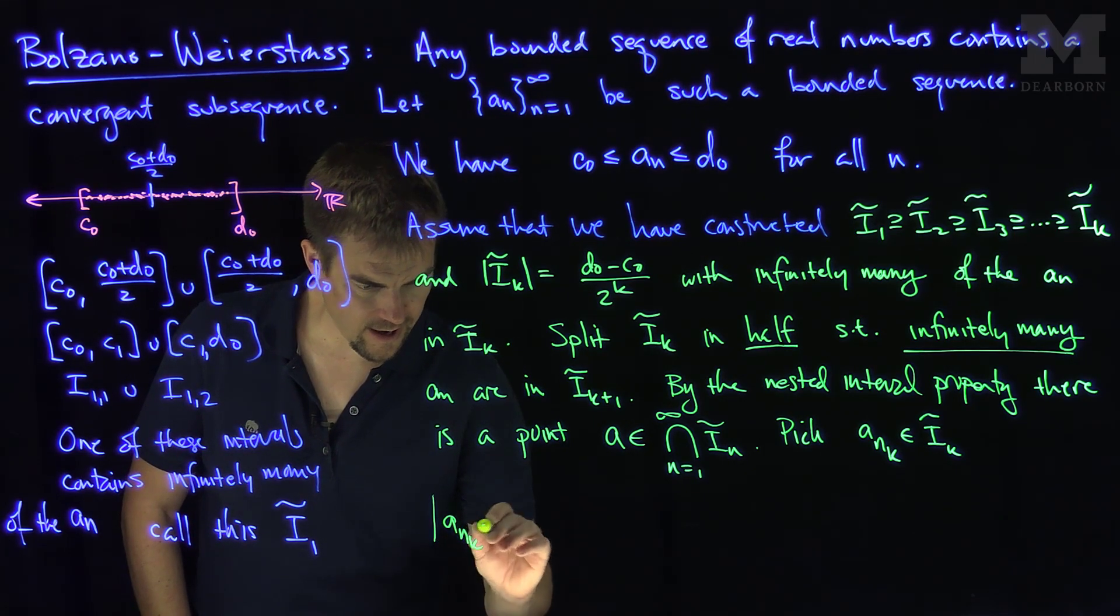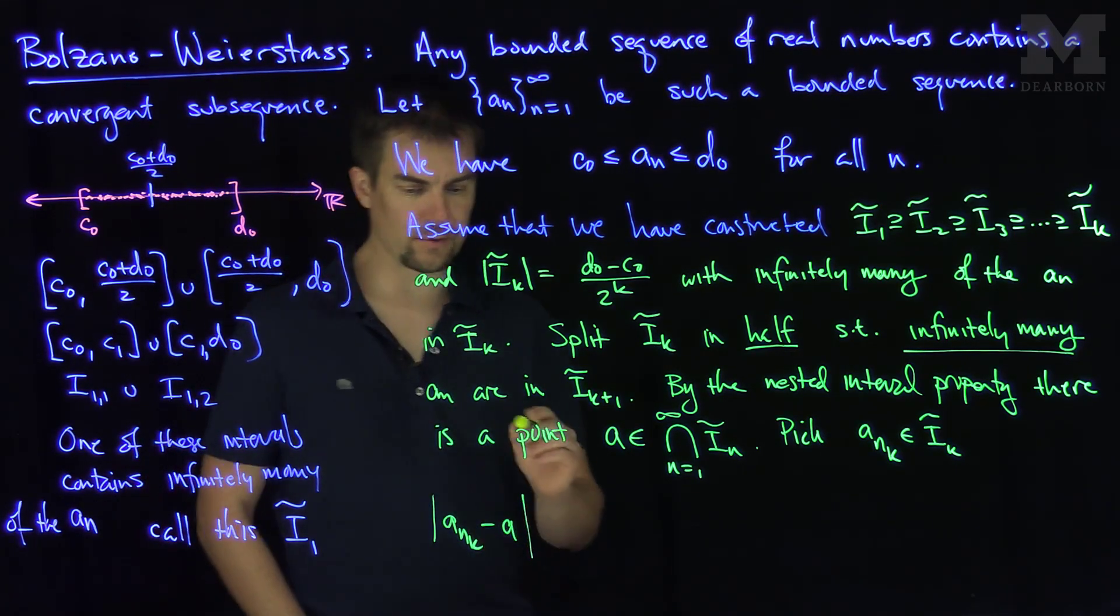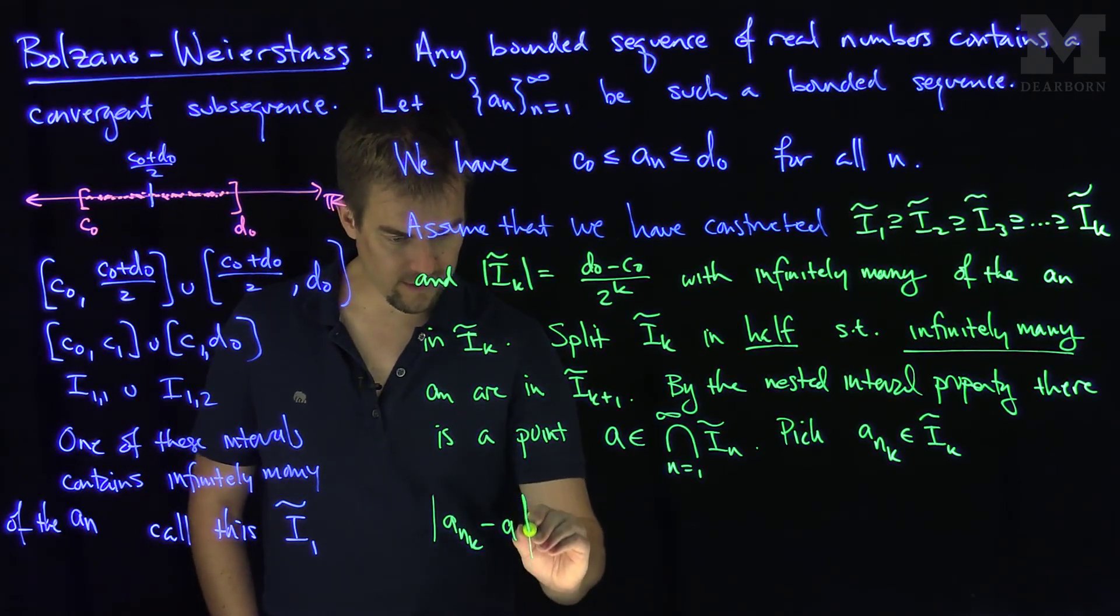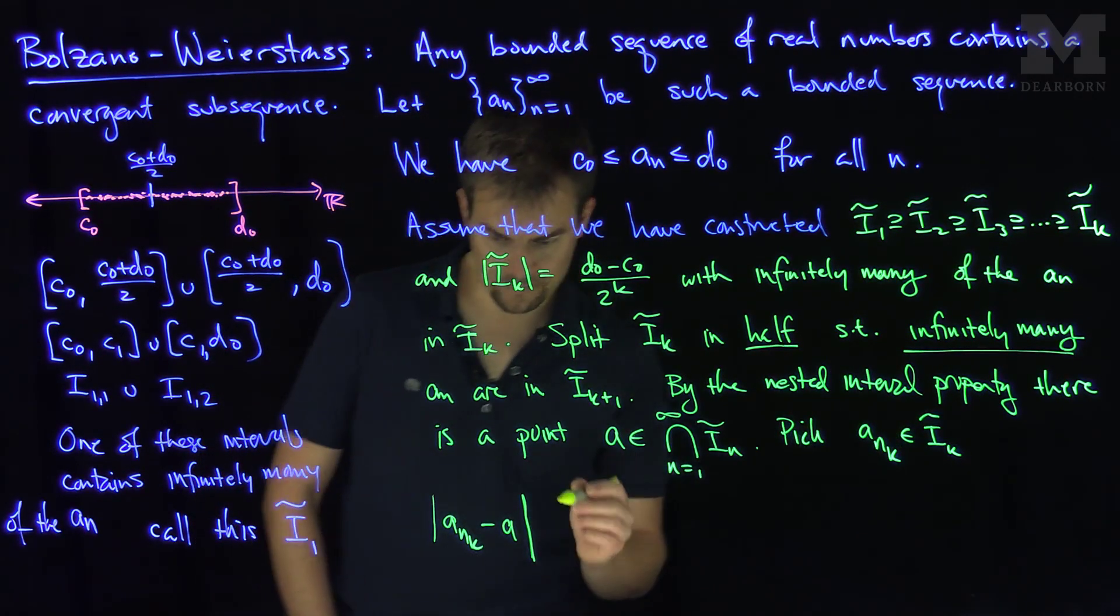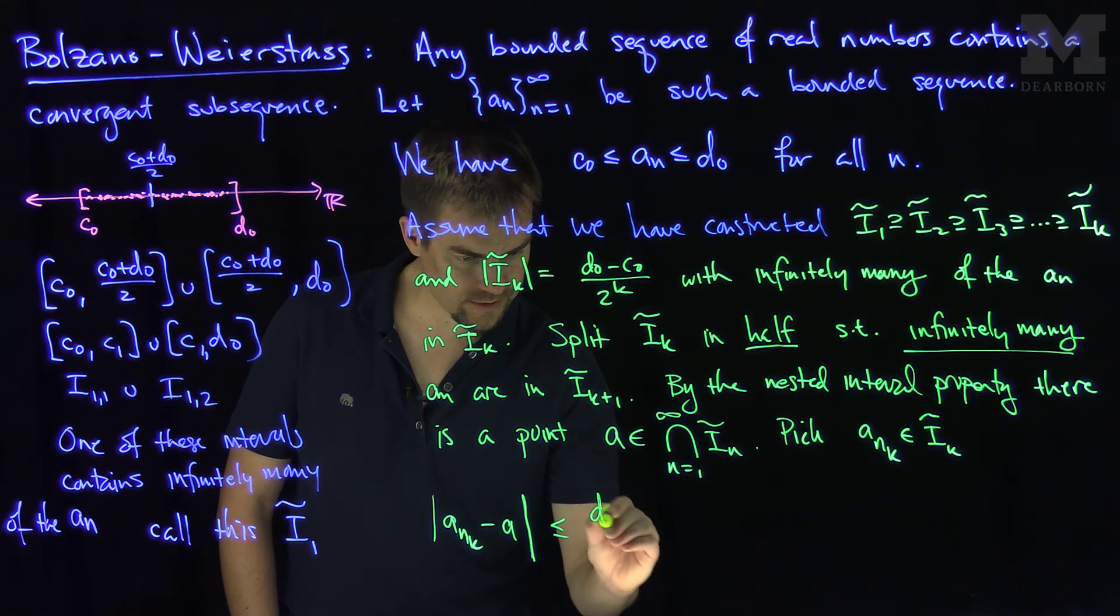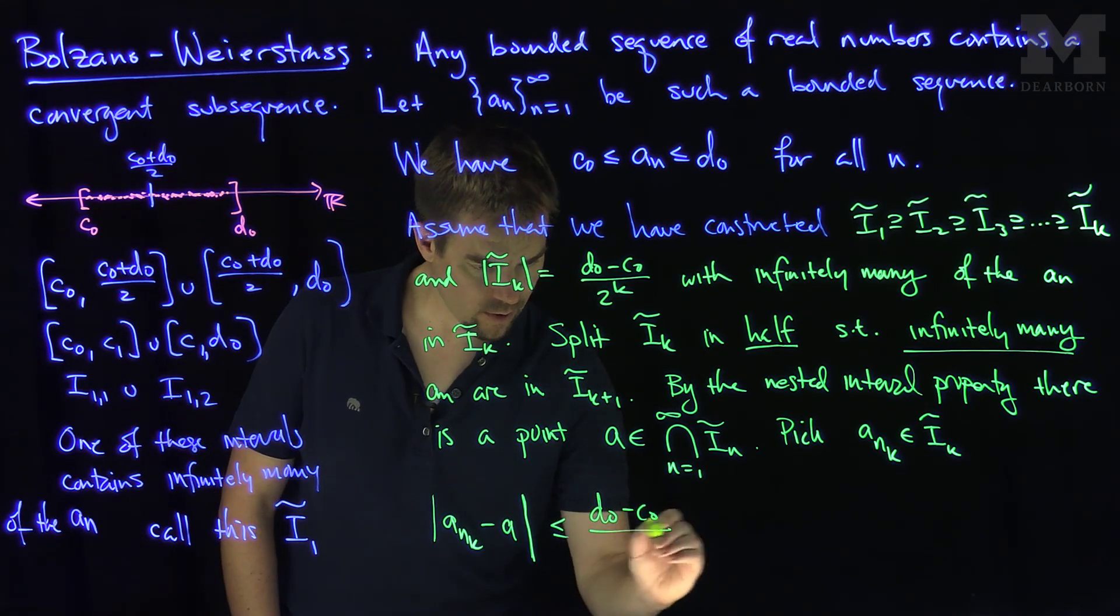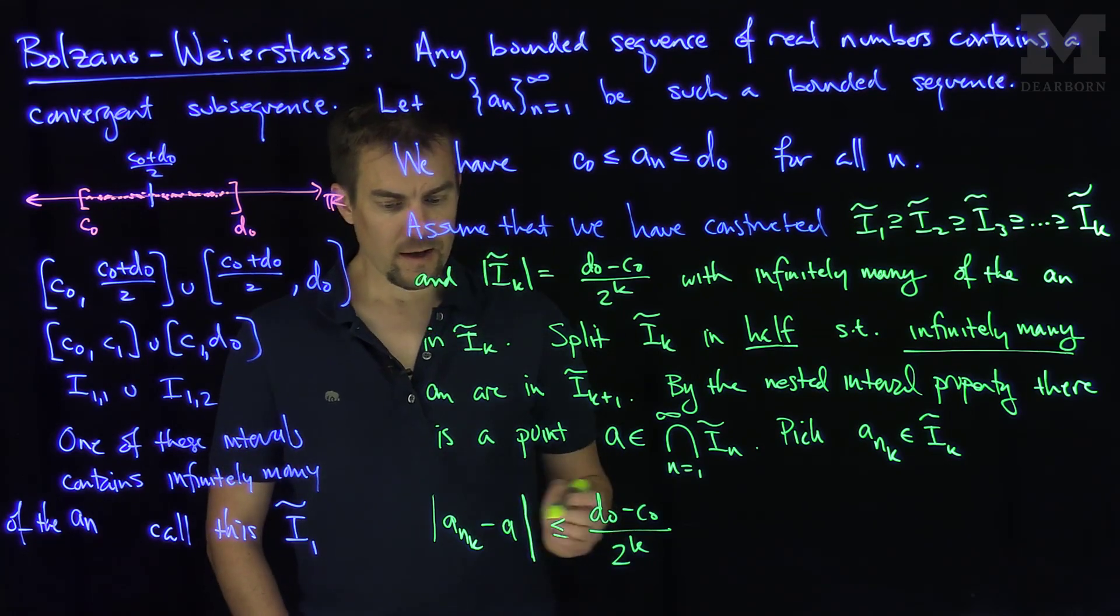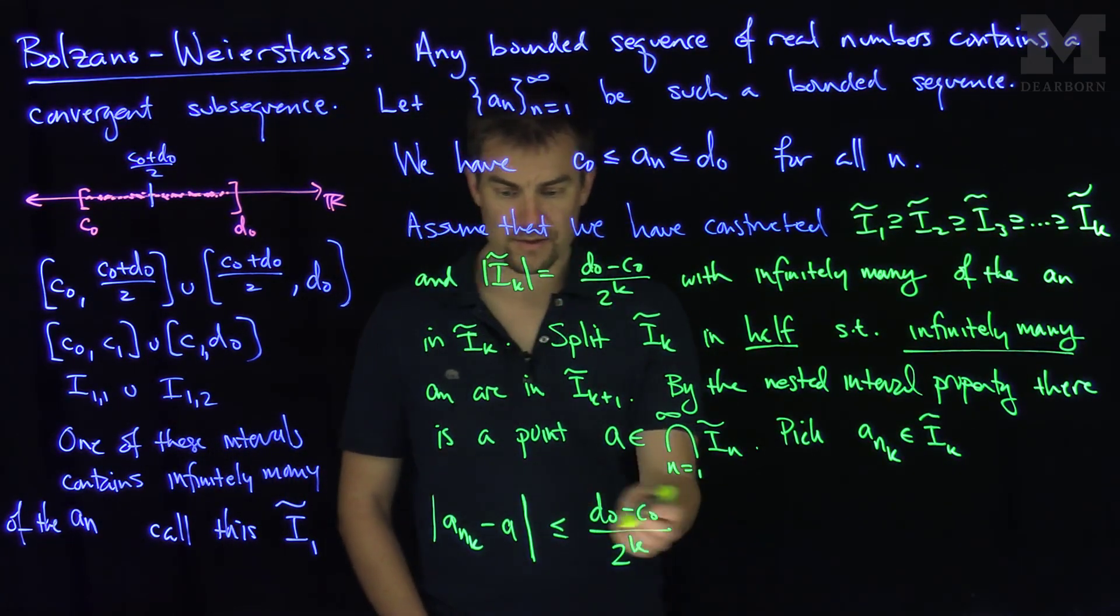We can say that ank minus a, in absolute value, is no more than the length of ik. And so this is going to be less than or equal to d0 minus c0 over 2 to the power k. And now as n goes to infinity, this tends to zero.